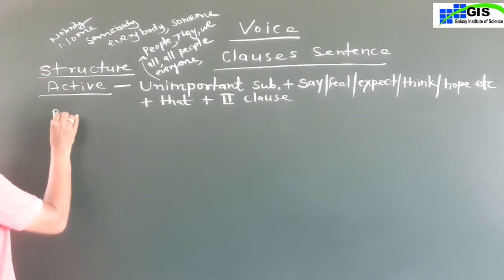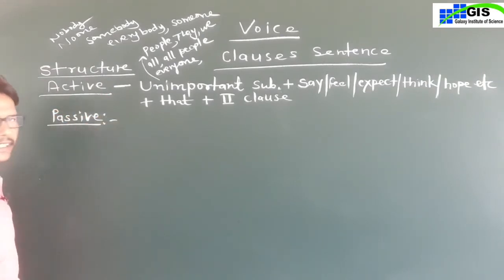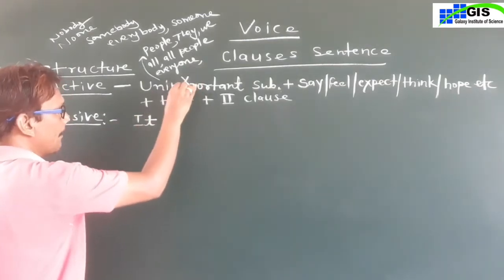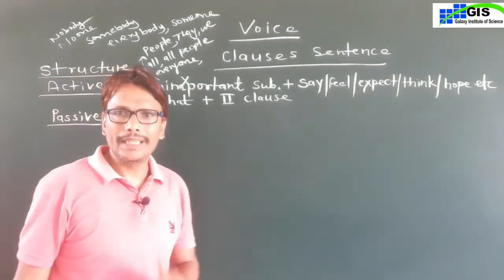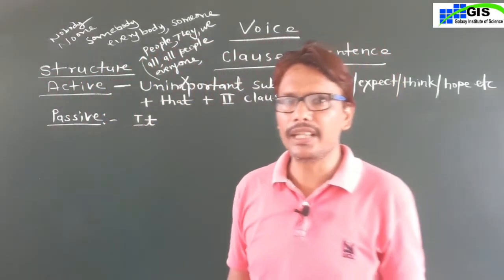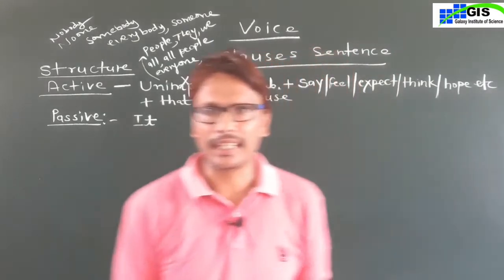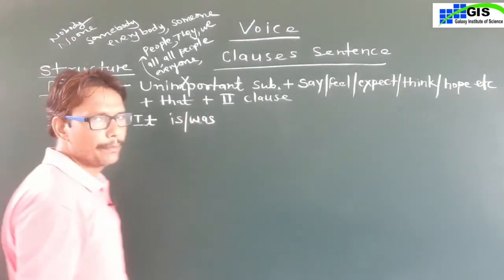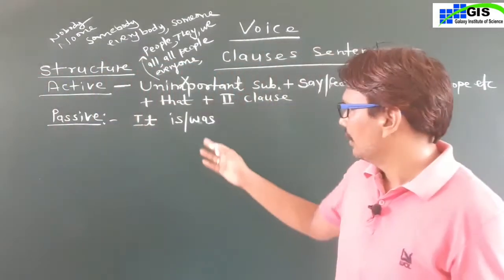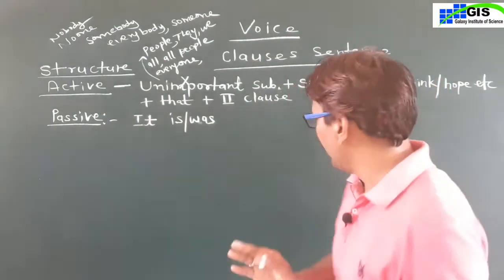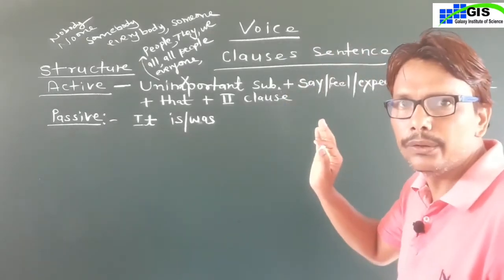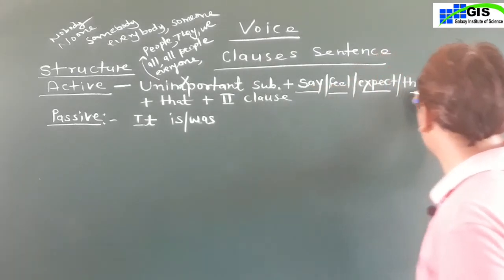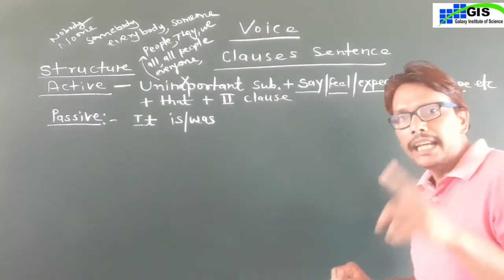If we want to transform this type of sentence into passive voice, first of all, remove the unimportant subject from passive voice — we do not use the unimportant subject in passive voice. Here, you will write 'it' as the subject. Then you will write 'is' or 'was' — only one of the helping verbs. If you find say, feel, expect, think, hope, or believe in first form, then you will write 'is'.